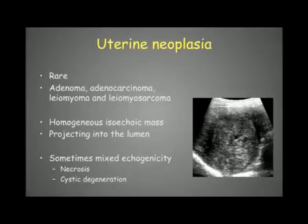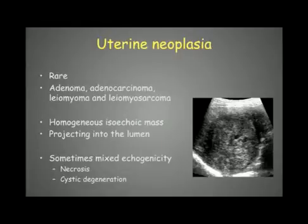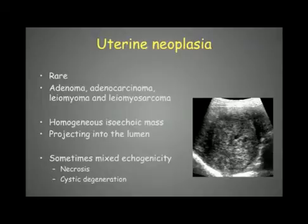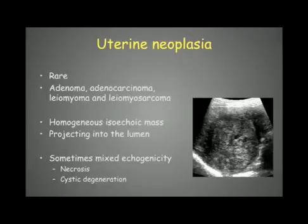Uterine neoplasia is quite rare in dogs and cats and can include adenoma, carcinoma, leiomyoma, or leiomyosarcoma. Generally the mass appears fairly homogeneous and hypoechoic, projecting into the lumen. Sometimes it can have mixed echogenicity due to necrosis or cystic degeneration within the mass, resulting in hypoechoic areas as we can see in this image.